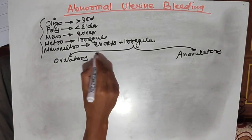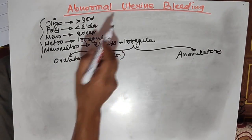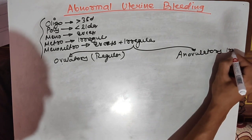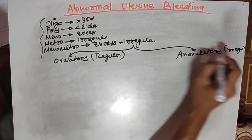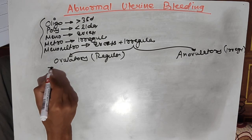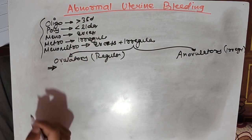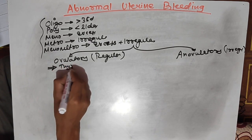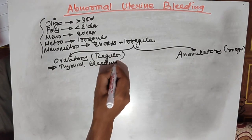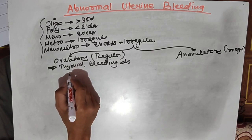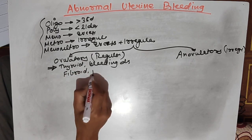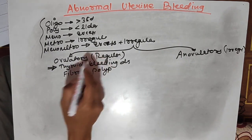If the cycle is regular but there is some abnormality in the bleeding period, then it is ovulatory type. If the cycle is irregular along with abnormal uterine bleeding, it will be anovulatory. The most common causes of ovulatory or regular-cycle AUB include thyroid disorder, bleeding disorders, or structural abnormalities in the uterus like fibroids or polyps, because hormones are not affected in ovulatory type.